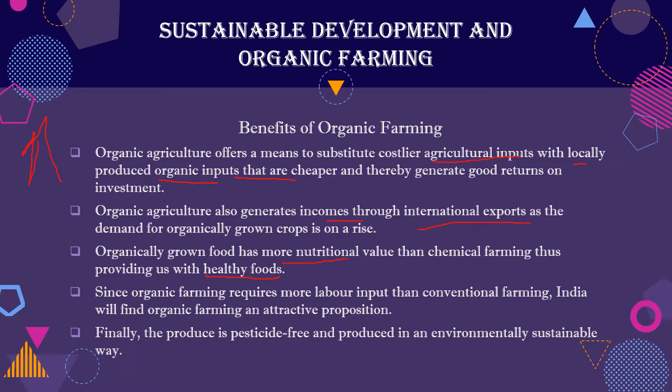The nutrition value is more, and therefore the demand is more, which leads to more income. Now in India, where labor is more readily available, in organic farming labor intensive methods are used because you have to use locally produced organic inputs. This means you need more labor. If you have more labor, obviously where labor is abundant, those people get more support. This is a benefit of organic farming, and because it avoids chemicals, it is environmentally sustainable.